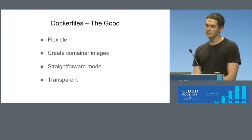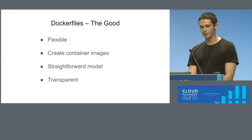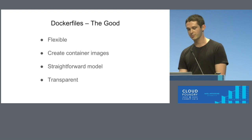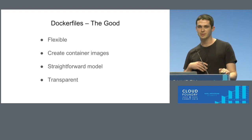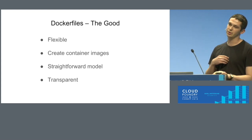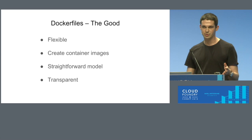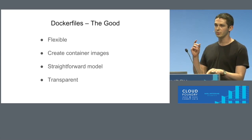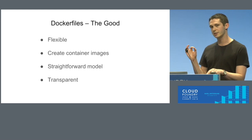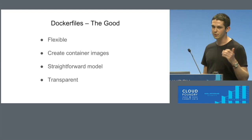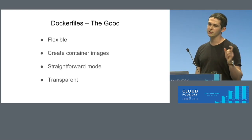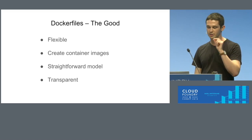A really popular alternative in the application build is the Dockerfile model. There are a lot of good things about Dockerfiles. Dockerfiles are really flexible. It's really easy to add dependencies, change up your application image. These Dockerfiles create container images. Container images come with immutable container layers. So we know that the code we are testing against is the same code we are deploying. It's also a straightforward model, pretty easy to pick up. And we can easily tell what's going inside these Dockerfiles — we're writing it out line by line.